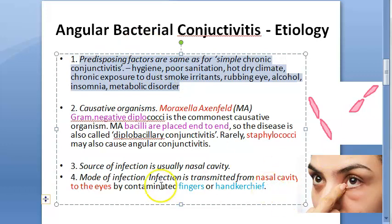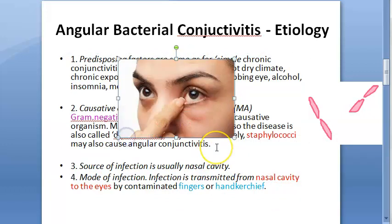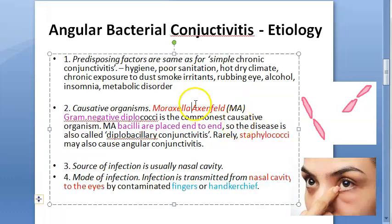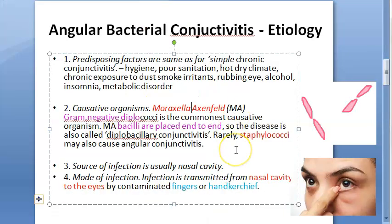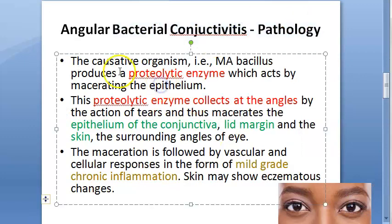The source of infection is the nasal cavity. The mode of infection is transfer from the nasal cavity to the eye via contaminated fingers or a handkerchief. So basically, the bacteria are transferred into the eye. The causative organism is Moraxella axenfeld.